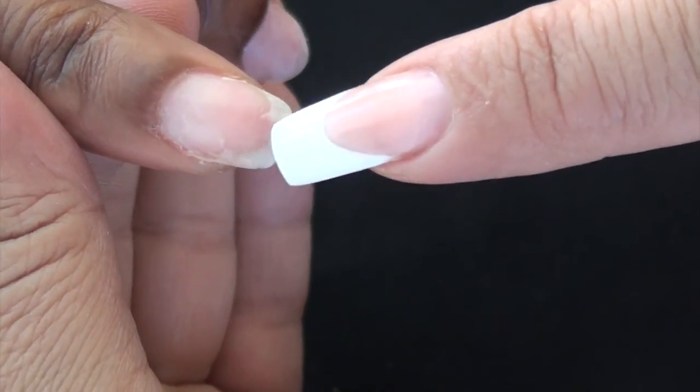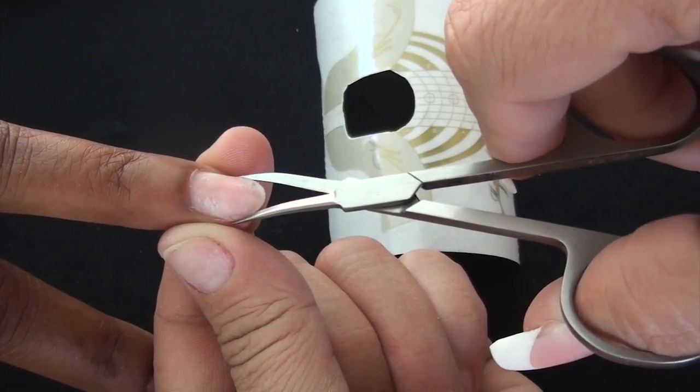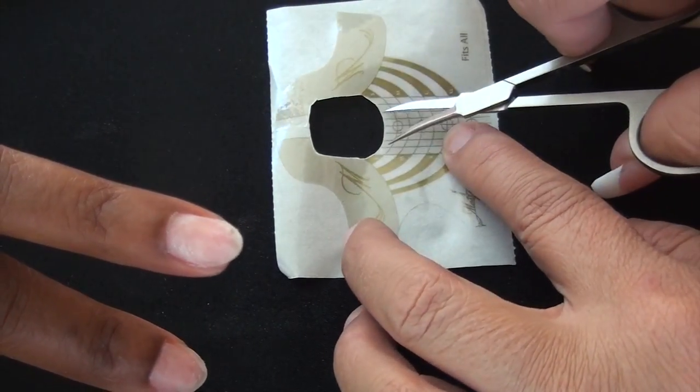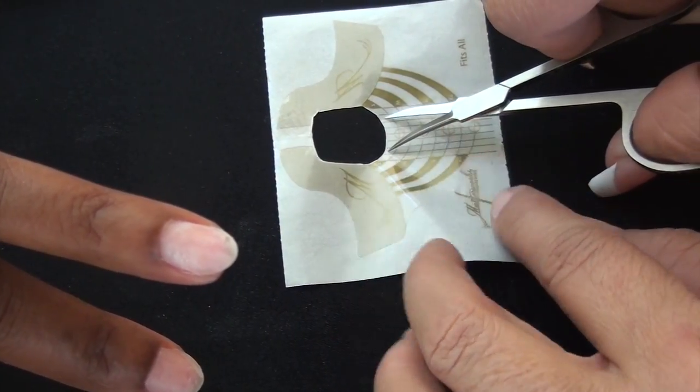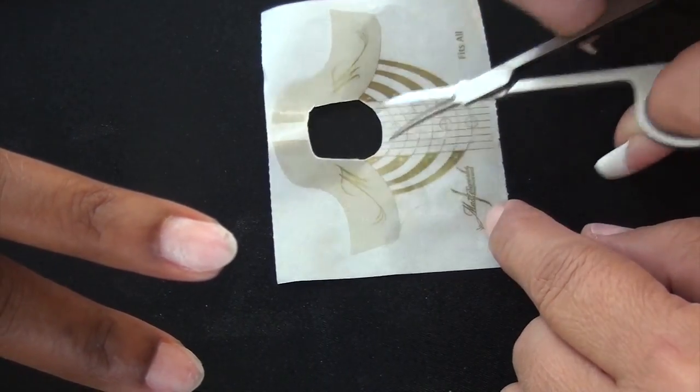First you're going to do is remove that free edge. The less you have in your way, the easier this will be. You're going to take your Masterworks Refining Scissors and measure from sidewall to sidewall right where your nail edge is. Take this measurement and ensure that your scissors are centered on the form, and press down just enough to make an indent.